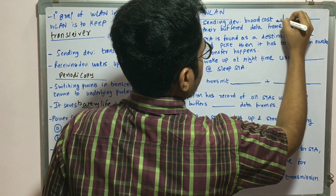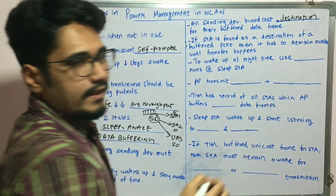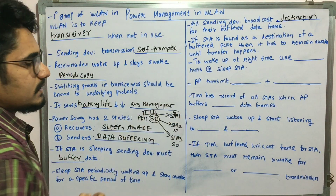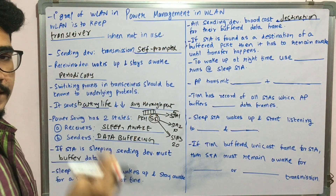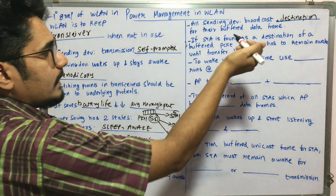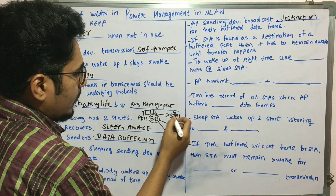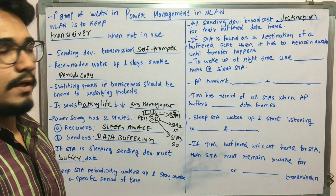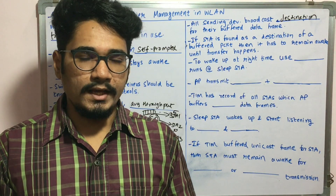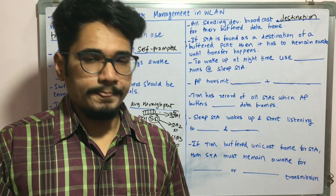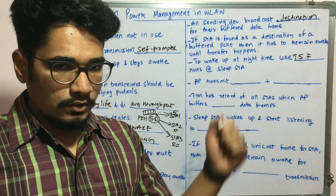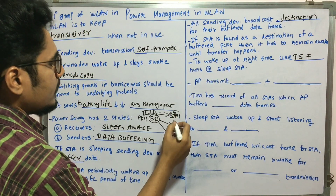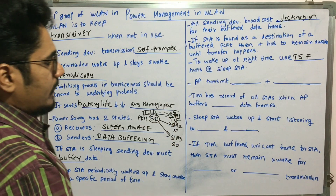All sending devices broadcast their destinations for their buffered data frames. Each sending device has a particular address; if packet 1 is for station 1, it is assigned to that station. If a station is found as the destination of a buffered packet, it must remain awake until the transfer happens. Just as we use an alarm to wake up at the right time, in 802.11 systems we use the TSF — Timing Synchronization Function — which is kept running at the sleeping station (STA1, STA2, STA3).